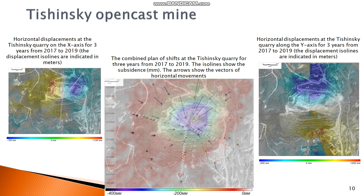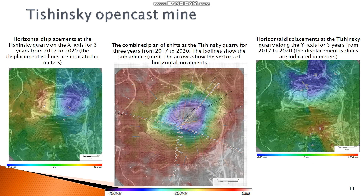The spatial displacements of the points of the Tyshinsky Opencast were obtained. All offsets were calculated over four years, from 2017 to 2020. The maximum horizontal displacement is recorded on the northern slope of the opencast, reaching a value of up to 398 mm over four years. In this work, a model of absolute movements — horizontal and vertical — was obtained based on Sentinel-1 data on the territory of Tyshinsky Opencast in the Republic of Kazakhstan.